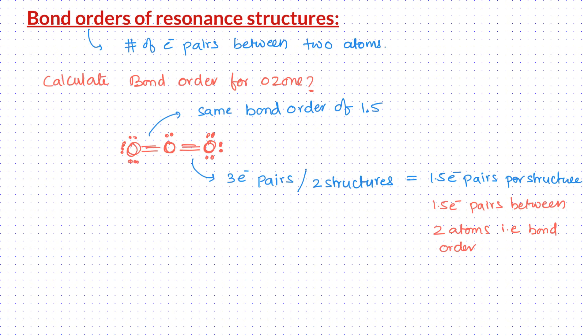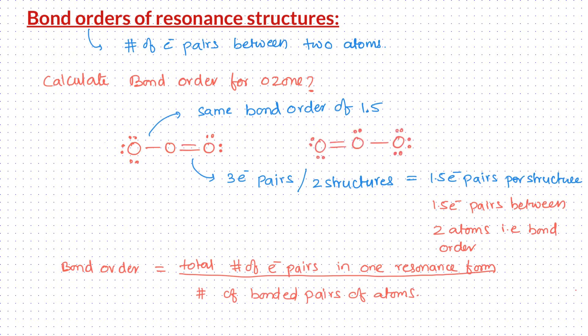If it is difficult for you to imagine the superposition structure, you can use the following formula to calculate the bond order. Bond order is equal to the total number of electron pairs shared in one resonance structure divided by the number of bonded pairs of atoms in the resonance structure. Let us calculate the bond order using this formula. In either of the resonance structures, there are, in total, three electron pairs that are being shared between two pairs of atoms. Therefore, the bond order is 1.5.